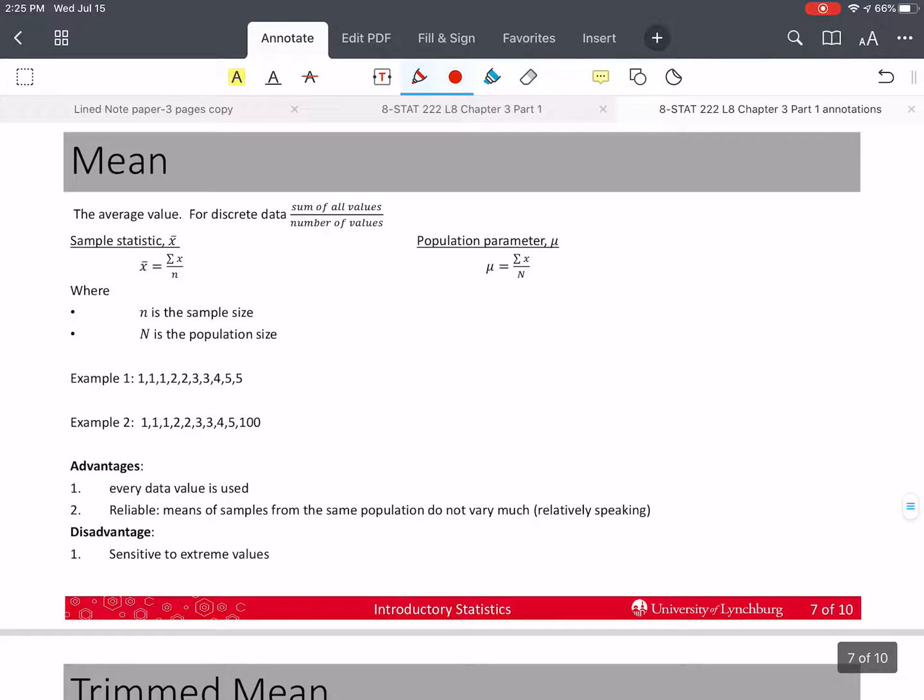Now, let's talk about the mean. It's one of the most common measures of center. And the advantage is that it uses every value of data. Every one of the values of data gets used. It's also reliable, meaning that if you take the means of several samples from the same population, that the values that you get should not vary very much. But the disadvantage is that it's sensitive to extreme values. Everybody should know how to calculate the mean. You add up all the values that you have, and you divide by the number of values that you have in the data.